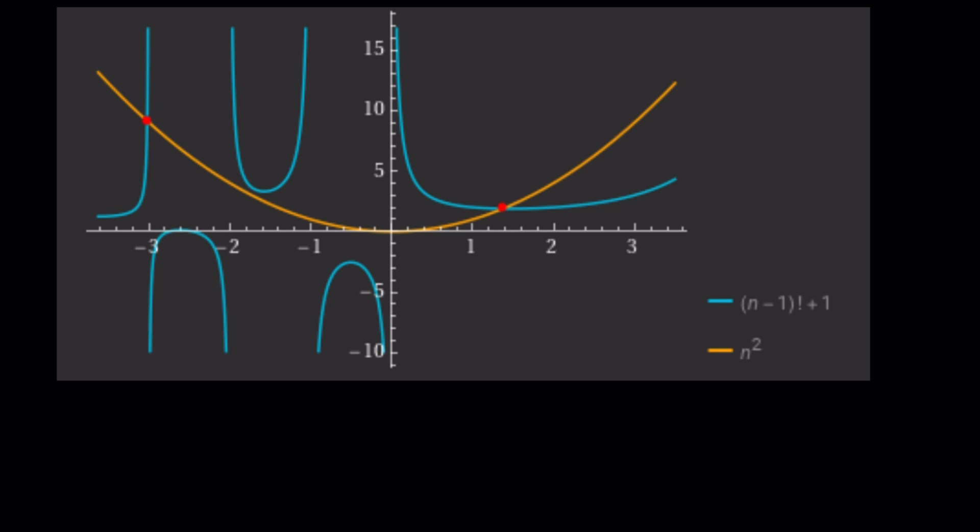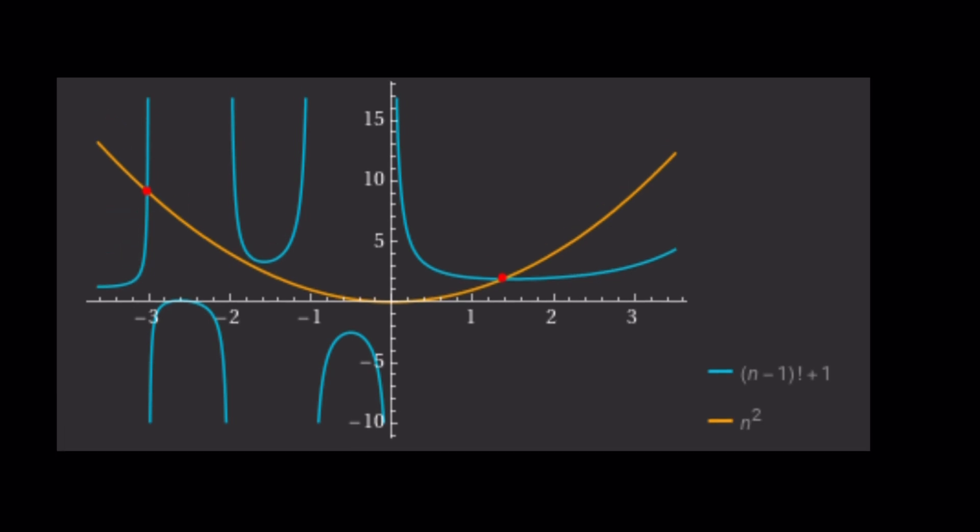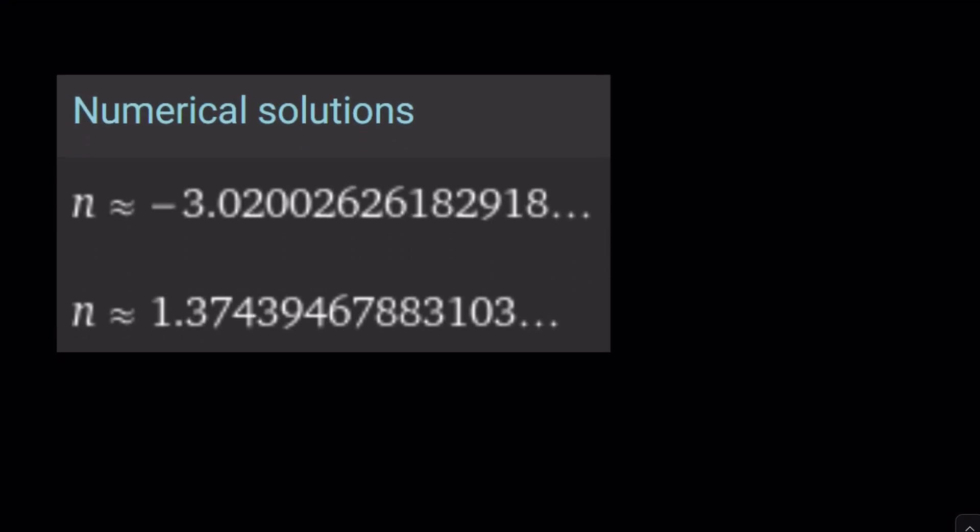One thing that's interesting is, though, we do see two intersection points in this graph. Can you guess what they are? One of them looks like negative 3. The other one is kind of between 1 and 2. Obviously, that's not what we're looking for, but I just wanted to show you this is really cool. If you are looking for real solutions, obviously, you're not going to find them algebraically, but you can kind of at least look at them visually. And these are the numerical values.